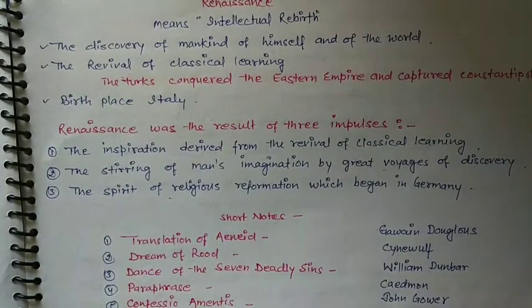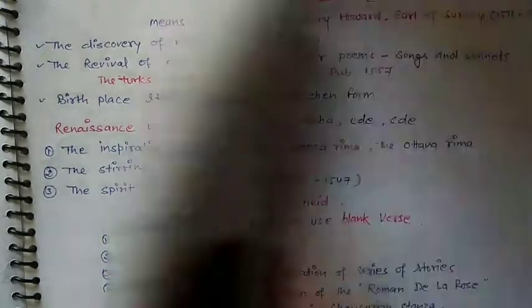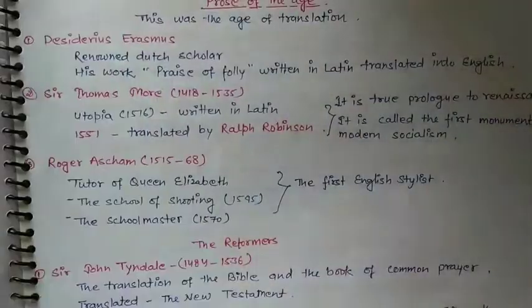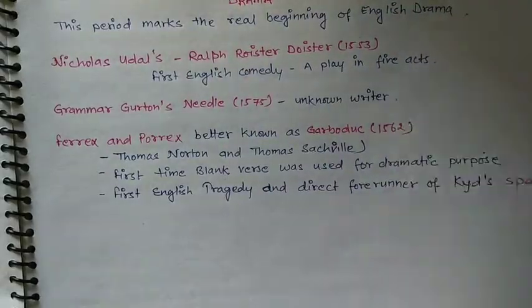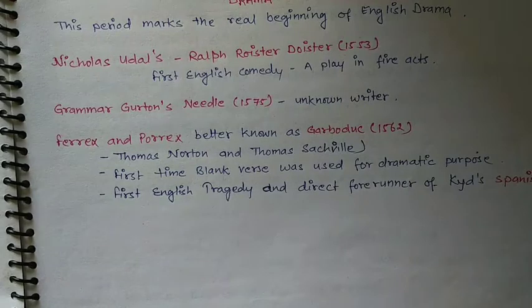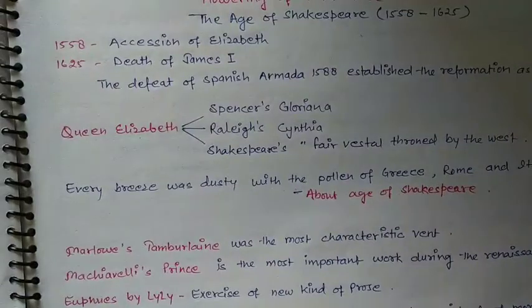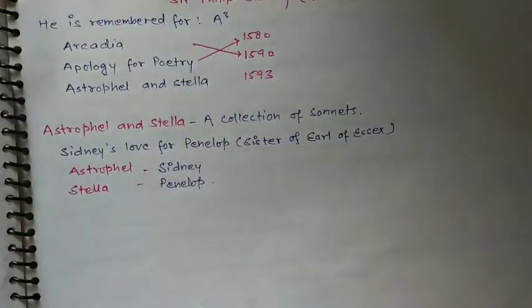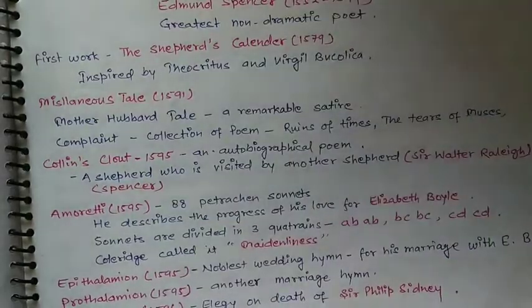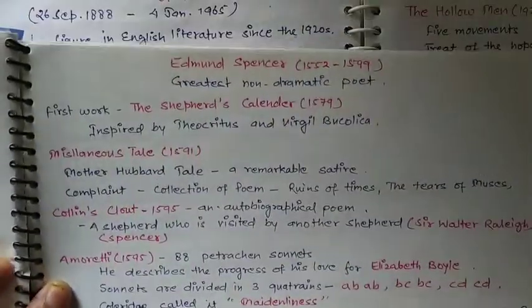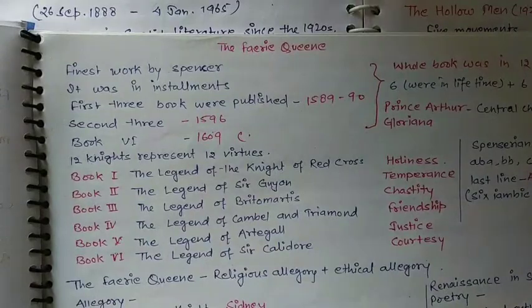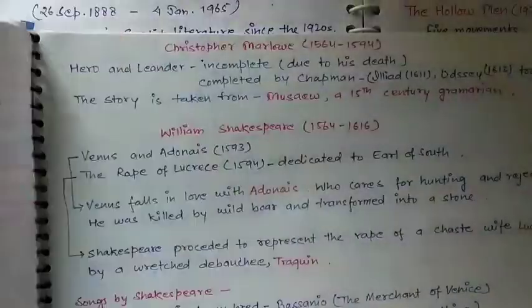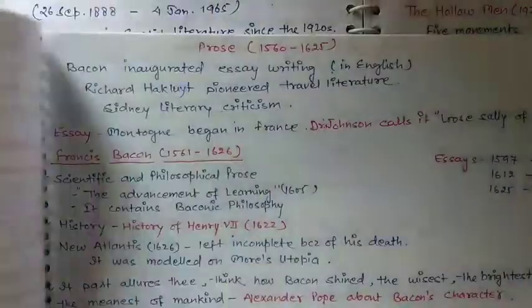I have tried to include important terms in the notes. You can see poetry in the Renaissance, prose of the age, and I have categorized each age into drama, poetry, novels, and prose. There is a section on the flowering of the Renaissance and then important writers like Edmund Spenser — all his works are here, including The Faerie Queene — and later Christopher Marlowe's sonnets.